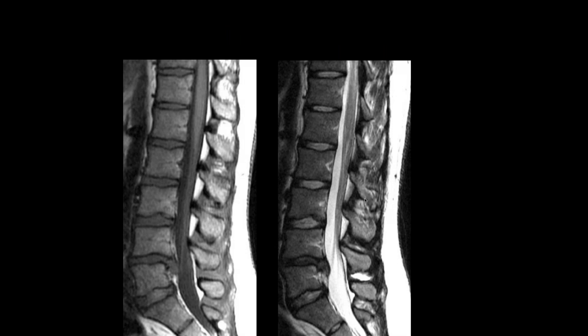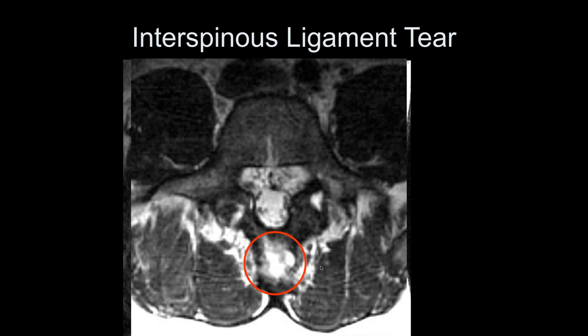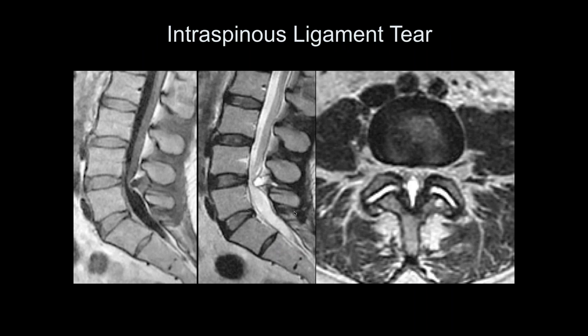There's some retrolisthesis of L4 on L5 and some disc extrusion. There is real edema in the interspinous area — if you get an accident right there, there could be a posterior distraction type flexion injury. Here's another example: an interspinous ligament with fluid going in and compressing the nerve root. And here's just another example with a big cyst coming from an interspinous ligament tear, again compressing the thecal sac.